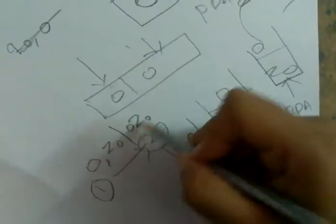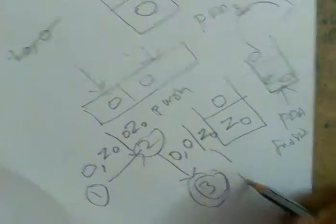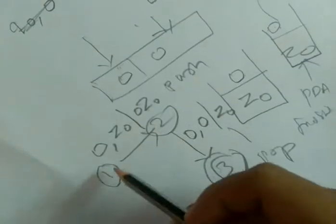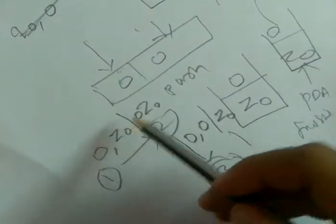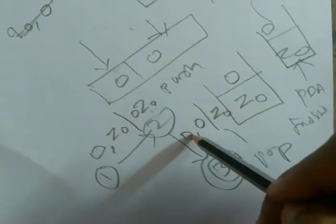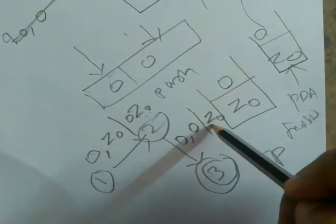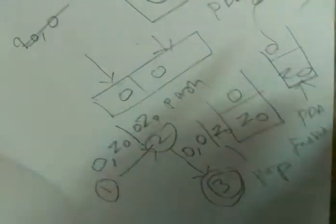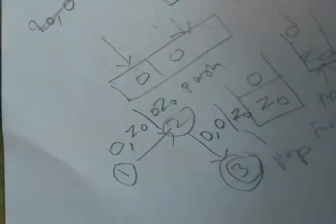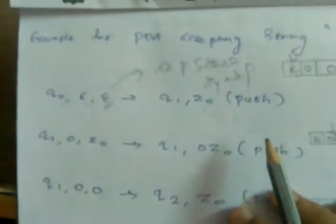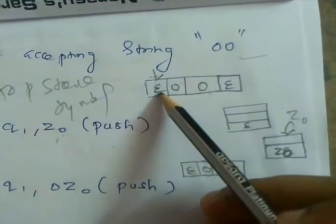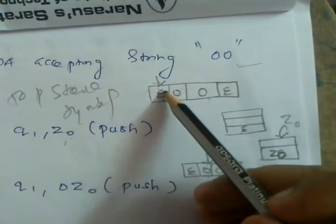This is the push operation, and this is the pop operation. So: read 0, push 0; read 0, pop 0. Then epsilon — that is the initial stack.